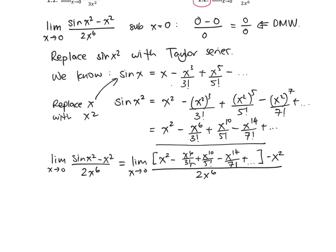Now we see rather conveniently that we can cancel some of these terms. Looking at the numerator, there's an x squared and a minus x squared, so those cancel. Our limit as x goes to zero can now be written as a bunch of different fractions: minus x to the sixth over 3 factorial divided by 2x to the sixth, plus x to the ten over 5 factorial divided by 2x to the sixth.